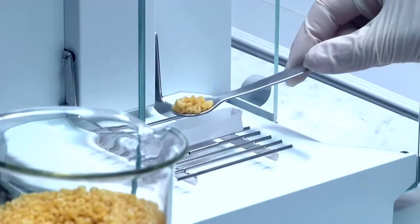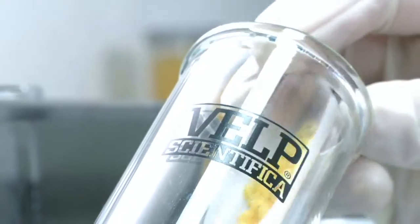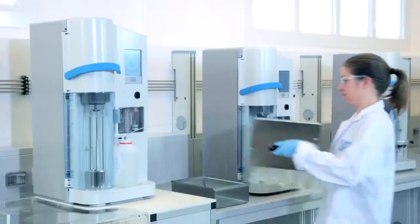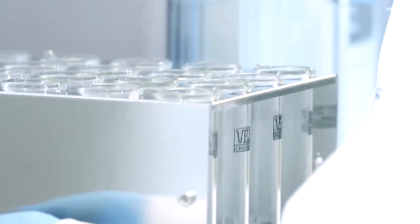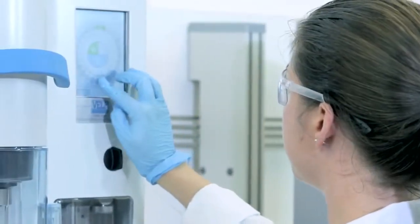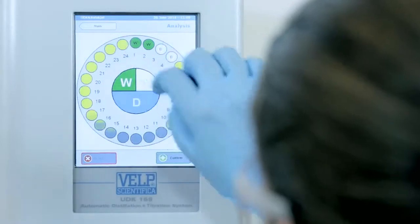Kjeldahl analysis is ideal for solid, semi-solid and liquid samples. Homogenize the sample completely, weigh and transfer it into a VALP glass test tube as specified by the official method. Sample weight can be registered directly from the balance.